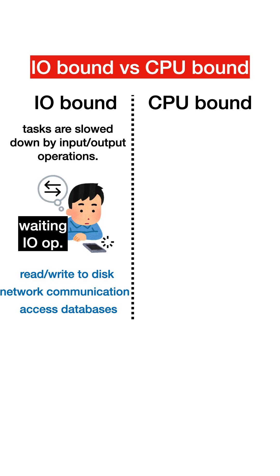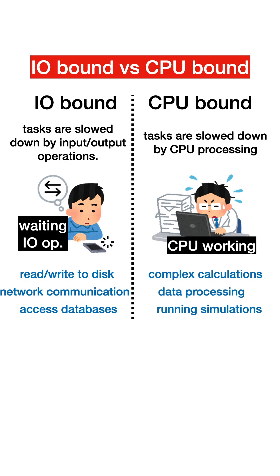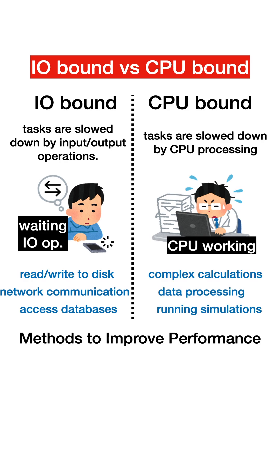On the other hand, CPU-bound tasks are those where the bottleneck is due to frequent CPU Bursts. In other words, CPU-bound tasks are slowed down by CPU processing. These tasks require a lot of computations, such as complex calculations, data processing, or running simulations.